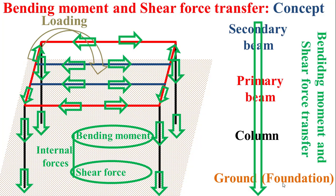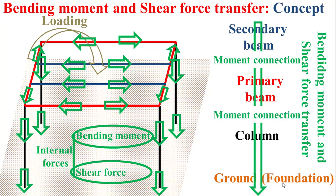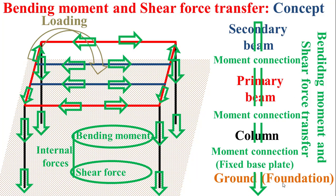In order to ensure the transfer of both bending moment and shear force, moment connections should be placed between secondary beams and primary beams, and also between primary beams and columns. We also have to place a fixed base plate as a moment connection between columns and foundations.